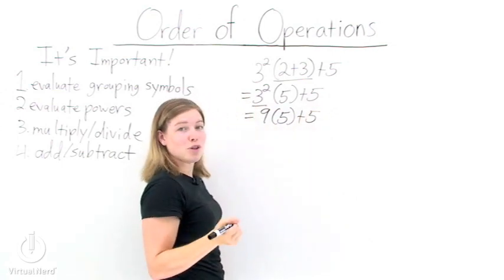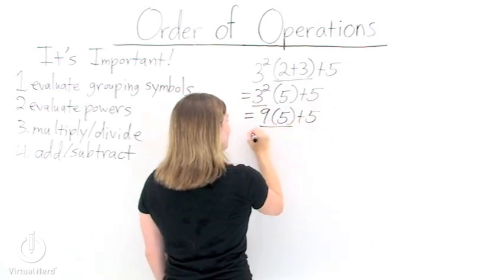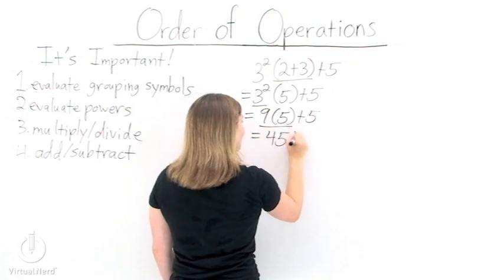Our third step, multiply or divide from left to right. So we get 45 plus 5.